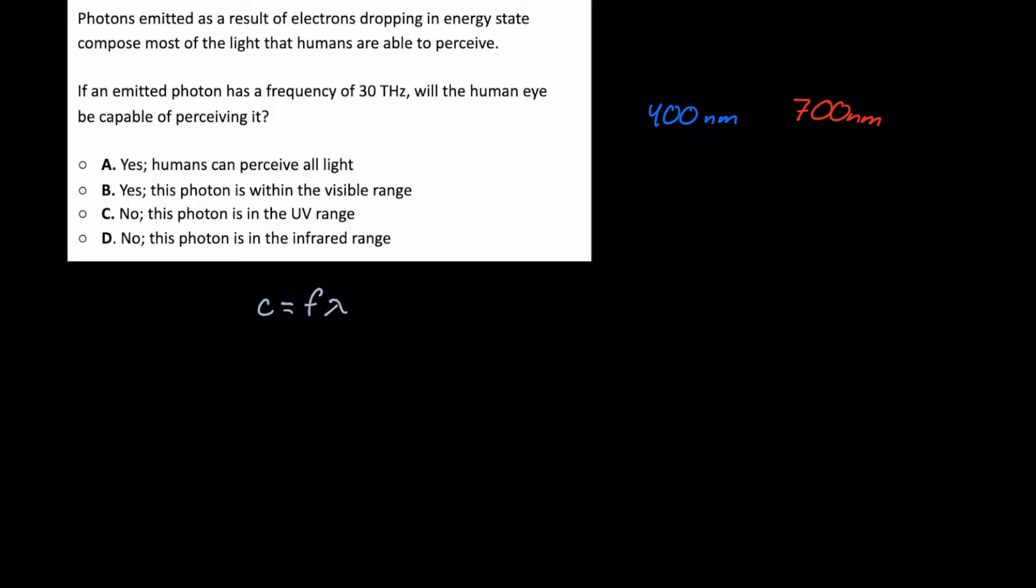So if we write this out, we can actually solve for wavelength here. So if we rearrange for wavelength, we get C divided by F. And we know C is 3 times 10 to the 8th meters per second. And our frequency is 30 terahertz.